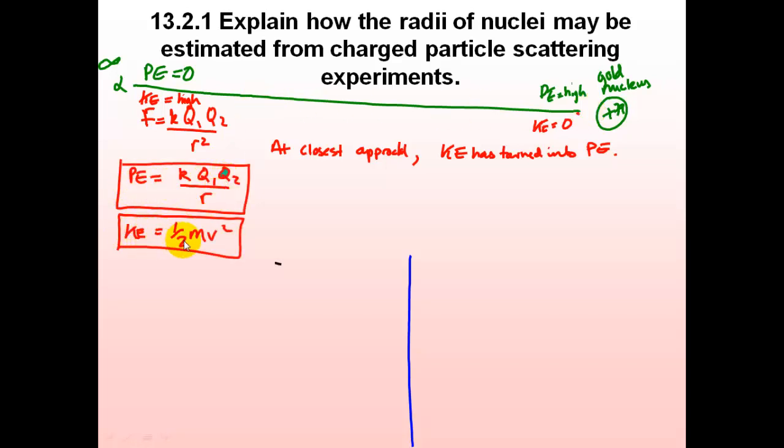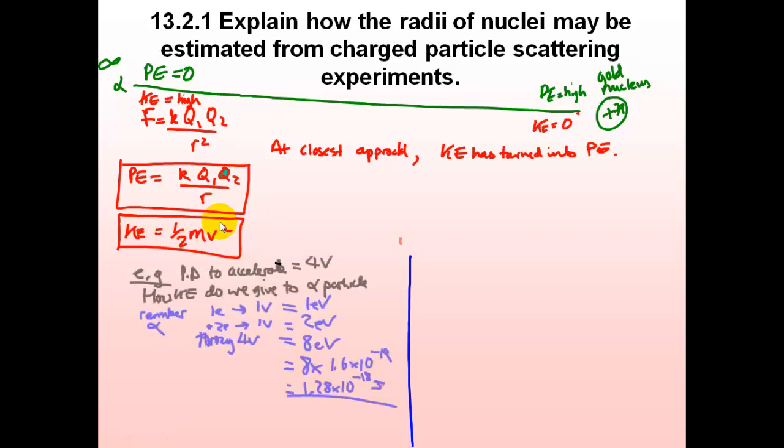So this is the equation for the potential energy. This is the equation for the kinetic energy, which is given by the accelerating voltage. Or if you know the velocity directly, you can work out the kinetic energy. Now you need to remember how the accelerating voltage equates to the kinetic energy.